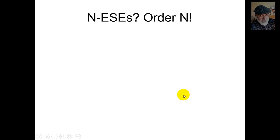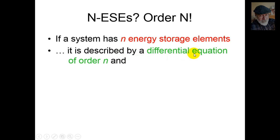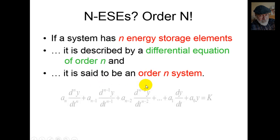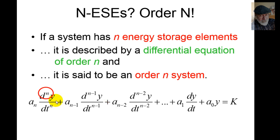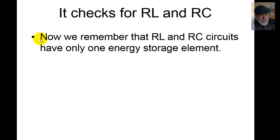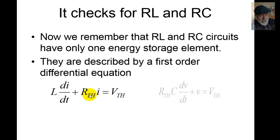If a system has n energy storage elements, it is described by a differential equation of order n, and it is said to be an order n system. Y is a function of time — in an electric circuit it could be a voltage or a current; in a mechanical system it could be a displacement. RL circuits and RC circuits have only one energy storage element — a capacitor in an RC circuit and an inductor in an RL circuit — so they are both described by a first order differential equation. They are indeed first order circuits.